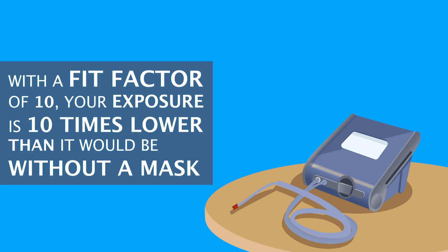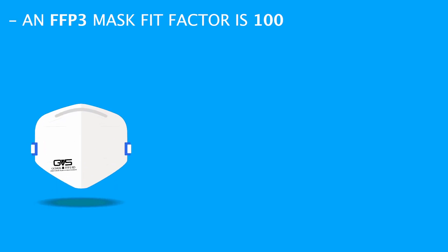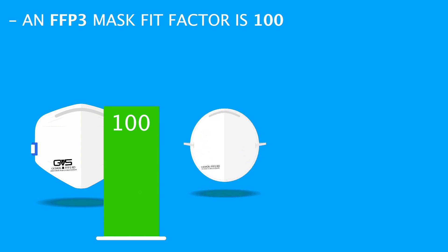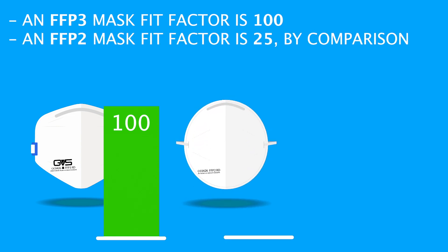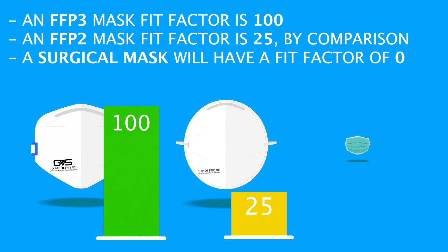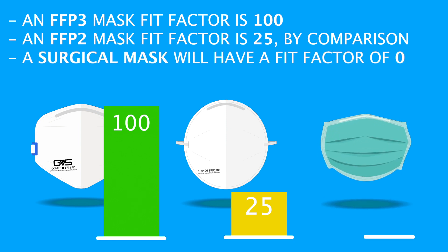With a fit factor of 10, your exposure is 10 times lower than it would be without a mask. An FFP3 mask fit factor is 100. An FFP2 mask fit factor is 25 by comparison. A surgical mask will have a fit factor of 0.